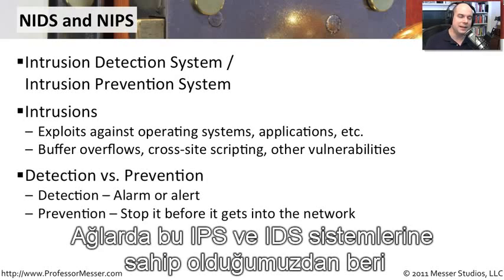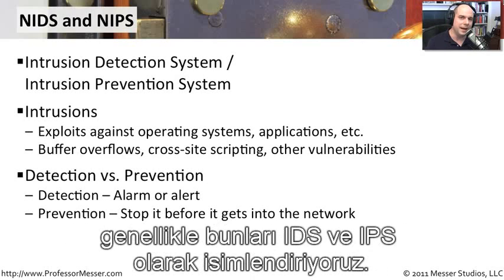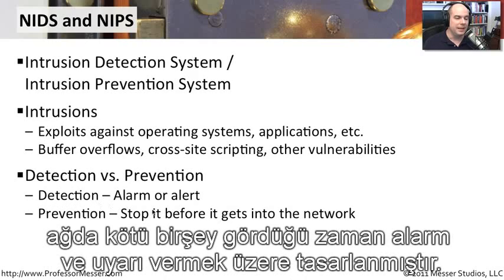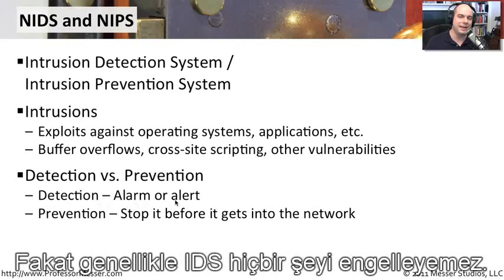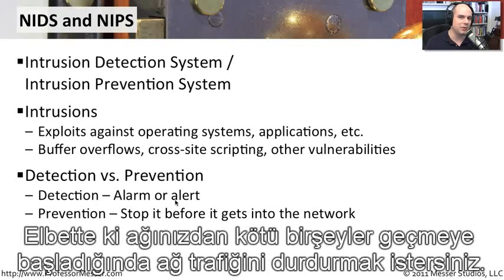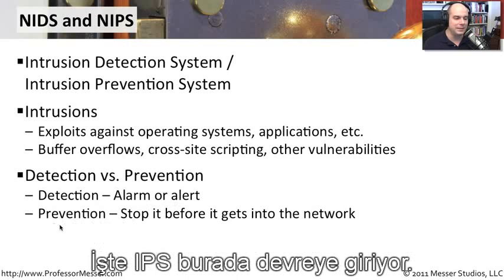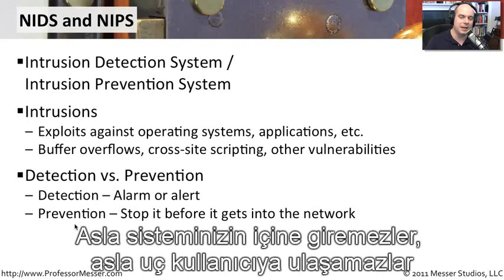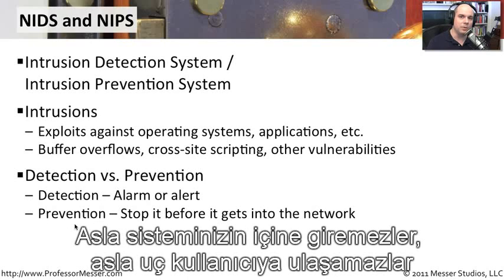When we have IPS and IDS systems on the network, we call them IDS or IPS based on what they can do when they find a problem. An IDS, an Intrusion Detection System, is designed to alarm or alert should it see something bad on the network. But IDS's can't stop anything. That's where IPS's step in — an intrusion prevention system stops bad traffic right there, so it never gets inside your network or makes it to the end user, making your network more secure.